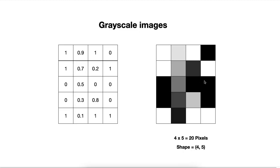So now, we haven't talked about the other colors, like red, green, or blue. This is called RGB images or RGB colors, which we'll talk about later. For now, we have seen the grayscale images and we will see more detail about them in the practice.